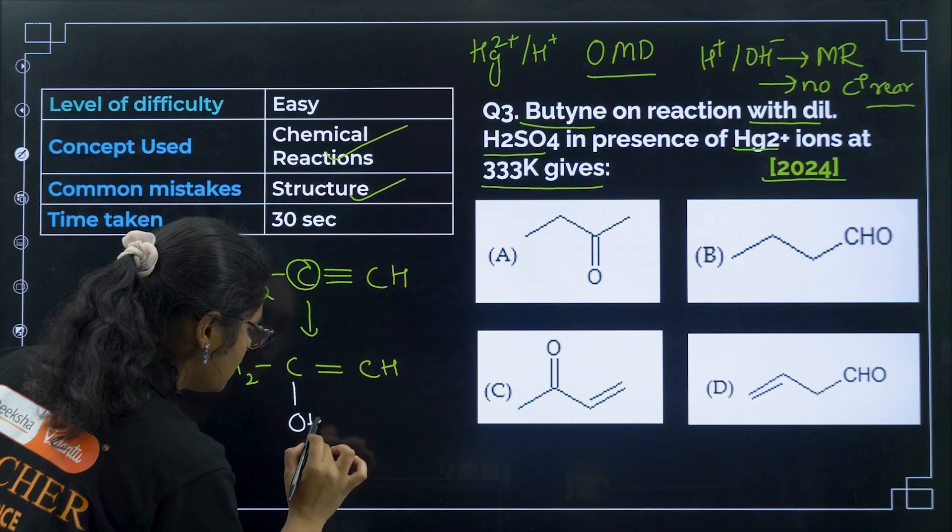Question 4 from 2023: what is the hybridization change involved at C1 in the given reaction? C1 in the starting material has four sigma bonds — that is SP3 hybridized. In the product, C1 has three sigma bonds — that is SP2 hybridized. So the change is SP3 to SP2, and the correct answer is option number B.